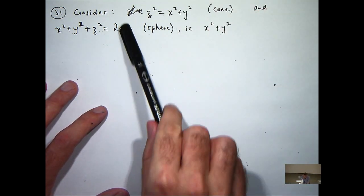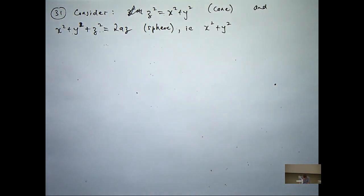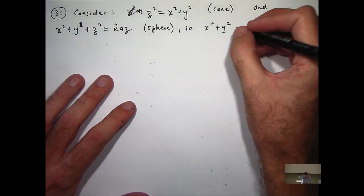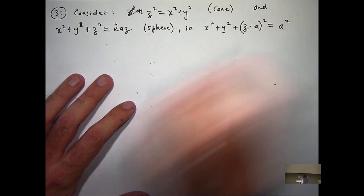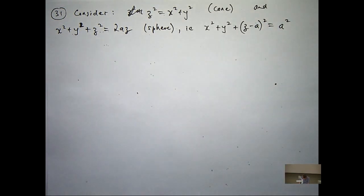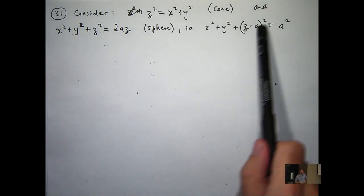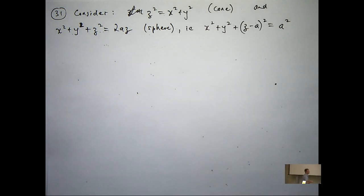I've taken half the coefficient of z and added it to both sides. When you're completing the square, it's all about the coefficient of z in this case, 2a. I've taken half that, squared it, added it to both sides, and then factorized over the z. You should check that.